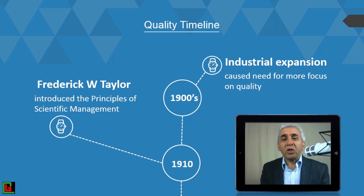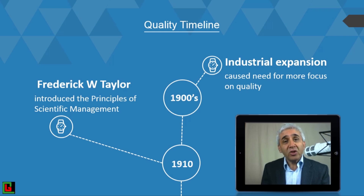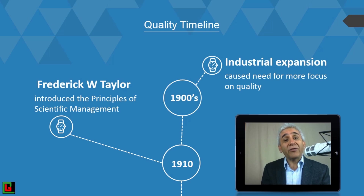Welcome to this video on the quality timeline, or the history of quality. In this around 10-minute video, I will take you through the history of quality — how quality has changed from inspection to quality control, then to quality assurance, total quality management, and today where we have excellence models, Six Sigma, lean manufacturing, and ISO 9001:2015.